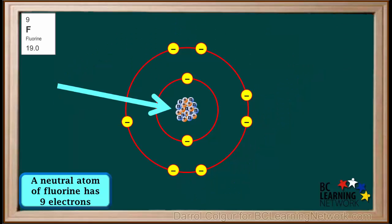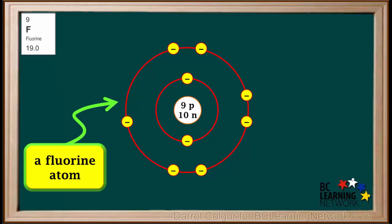The nucleus has 9 protons and 10 neutrons. Instead of a picture, this is usually simplified by showing a circle with 9p and 10n. So this is how we represent a neutral fluorine atom.